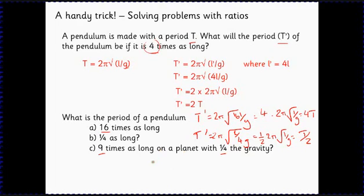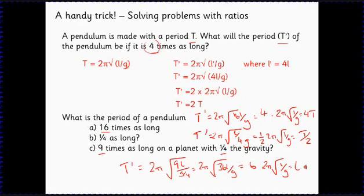Maybe the last one shows you that this technique actually does help you and you couldn't just do it in your head. If it's nine times as long and gravity is a quarter as much, T dash equals 2π times the square root, we've got nine times as long so 9L, a quarter g so that's g over 4. That becomes 2π times the square root of 36 L over g. Take the 36 out of the square root sign and that becomes 6 times the square root of L over g, which is 6T.